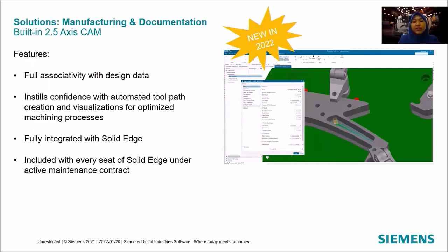A new capability in Solid Edge 2022 is the built-in 2.5-axis CAM, which is fully associative with design data and fully integrated with Solid Edge. It also has the capability to automate tool configuration and visualization. This will be included in every seat of Solid Edge under active maintenance.